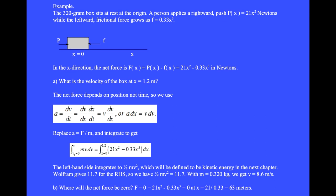The left-hand side integrates to 1.5mv squared, which will be defined to be kinetic energy in the next chapter. Wolfram gives 11.7 for the right-hand side, so we have 1.5mv squared equals 11.7. With m equal 0.320 kg, we get v equals 8.6 meters per second.